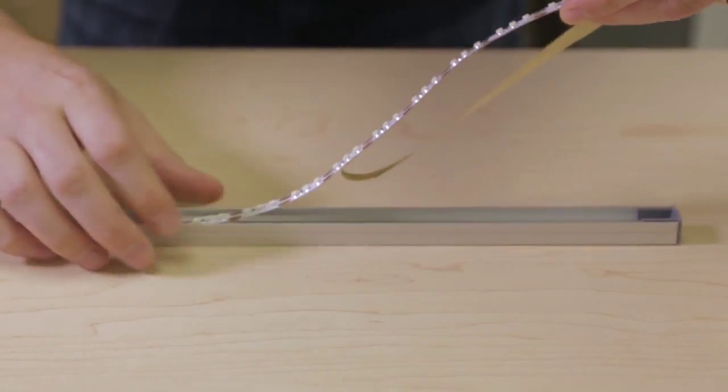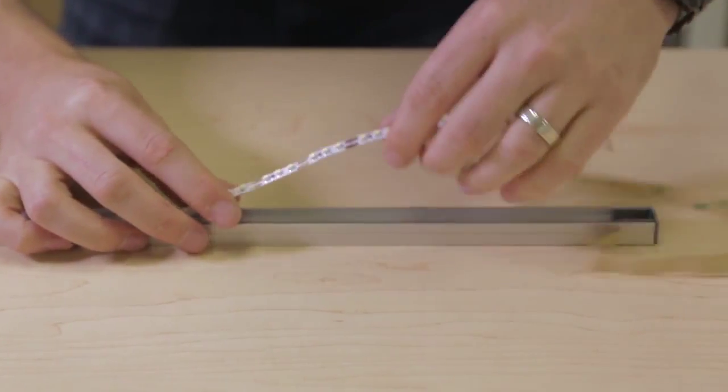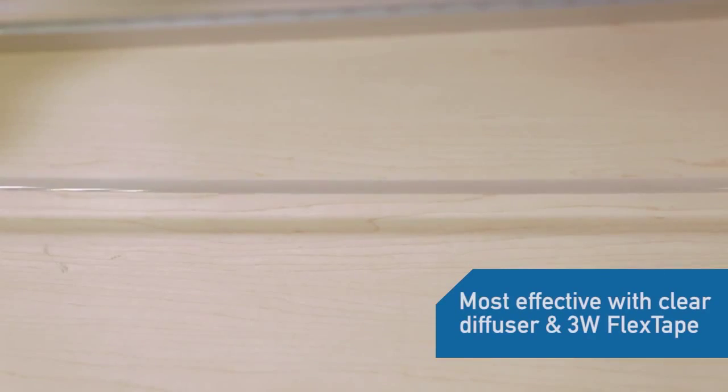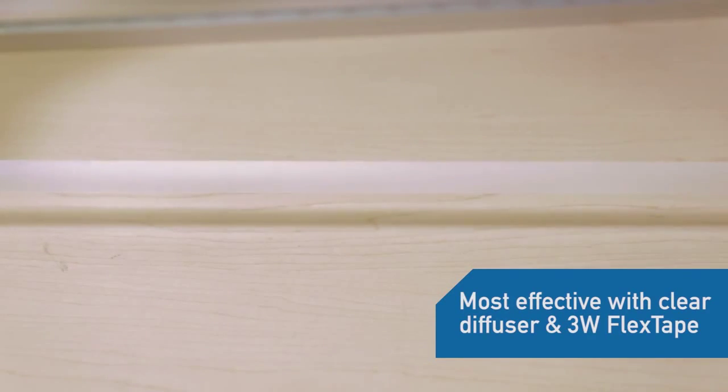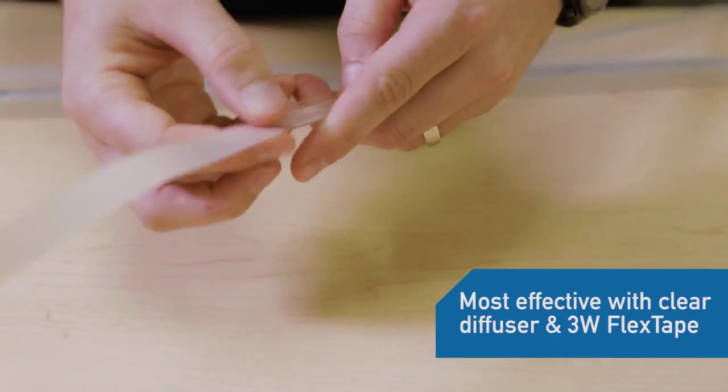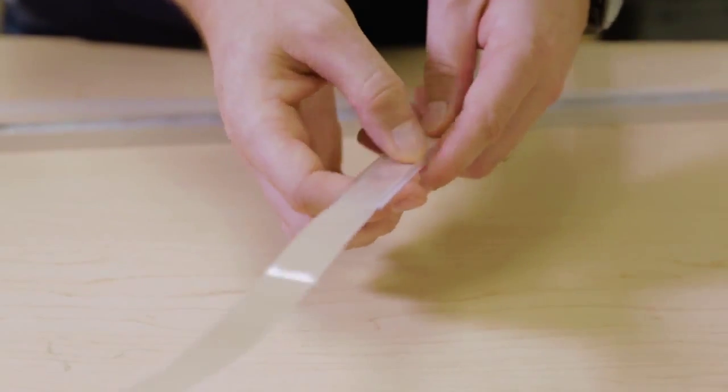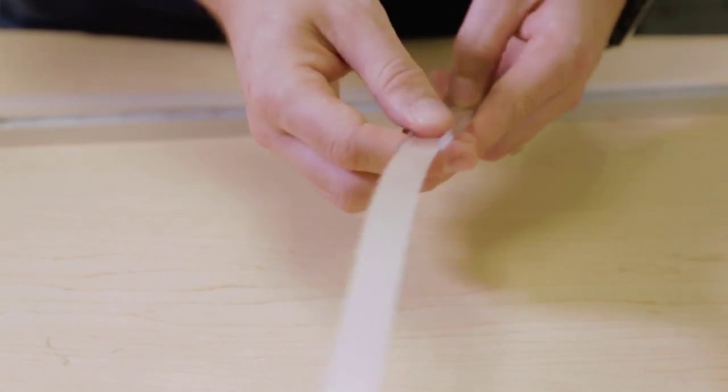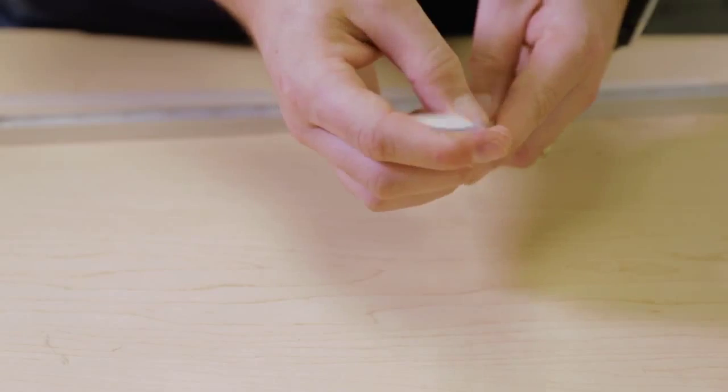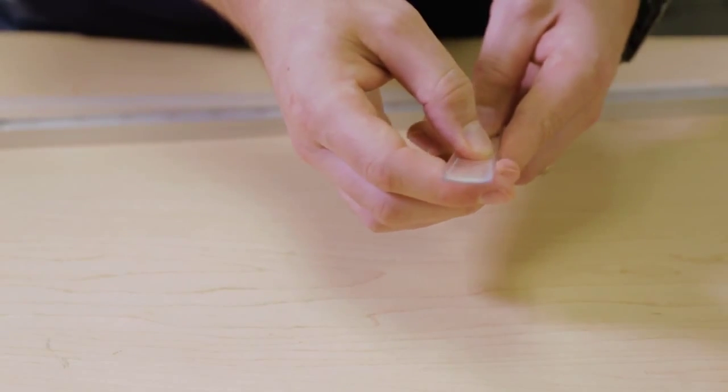If using the optional diode blending film, you will insert this now. Cut the film to match the length of the diffuser. The shiny reflective side of the film should face away from the diffuser.